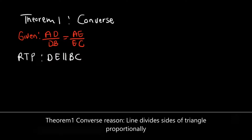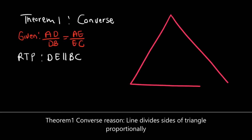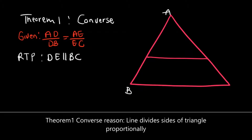Here is our diagram. We have triangle ABC with point D on AB and point E on AC. We are required to prove that line DE is parallel to line BC.